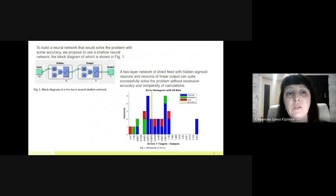To build a neural network that would solve the problem with more accuracy, we propose to use a shallow neural network, the block diagram of which is shown in Figure 1. A two-layer network of direct feed with hidden sigmoid neurons and neurons of linear output can quite successfully solve the problem without excessive accuracy and complexity of calculations.